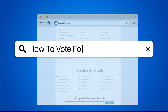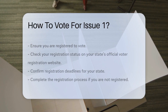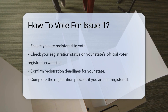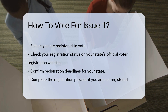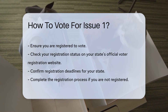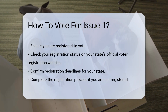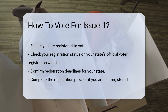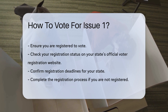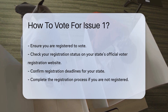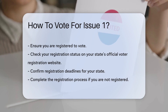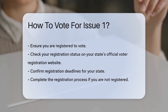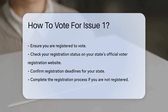How to vote for Issue 1. First, ensure you are registered to vote. Check your registration status on your state's official voter registration website. Registration deadlines vary by state, so confirm the date for your area. If you are not registered, complete the registration process. This can often be done online, by mail, or in person at designated locations.